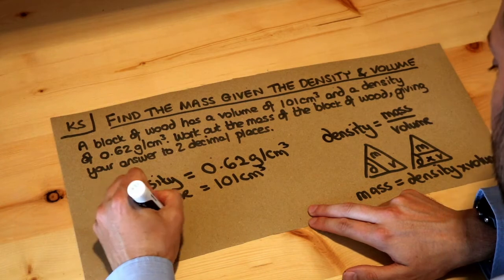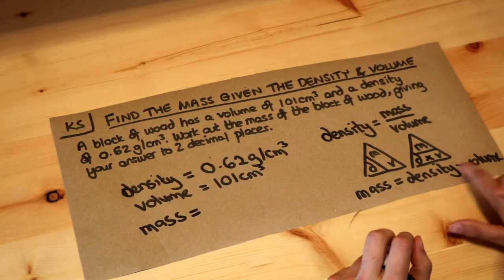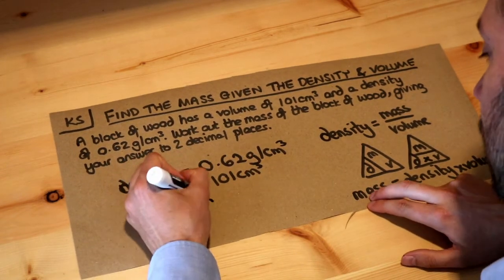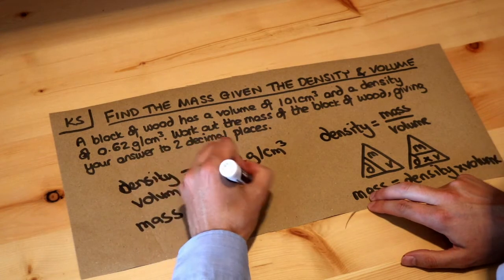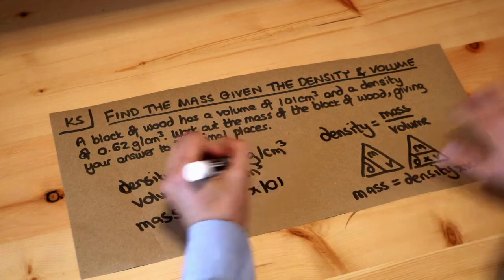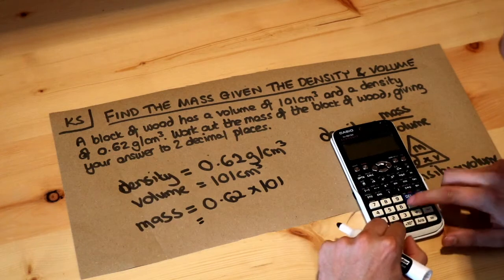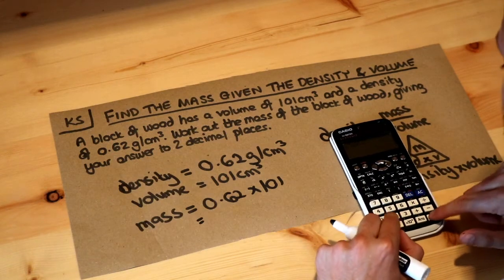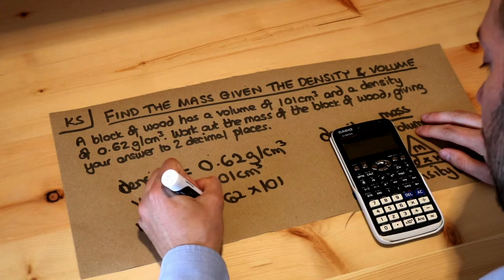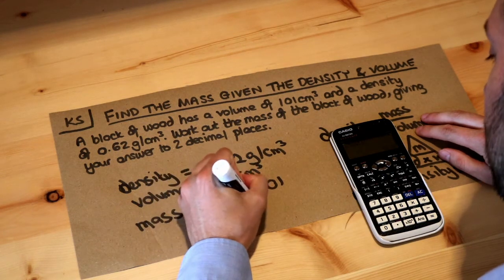Well, the mass is equal to the density times the volume, so the density 0.62 multiplied by the volume which is 101. I'm definitely going to use my calculator for this, and if I press the equals key, I get 62.62.